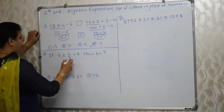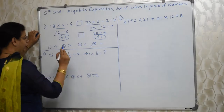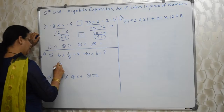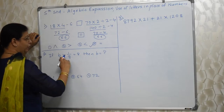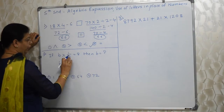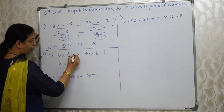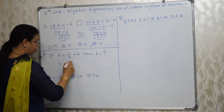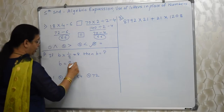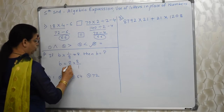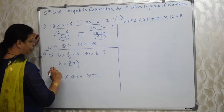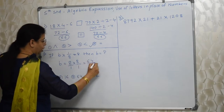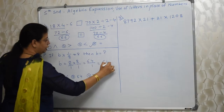Next one: if B into 1 upon 8 is equal to 8, then find B. We need to keep B on one side, and whatever is there with B, we shift it to the other side. This 1 upon 8 — whenever it goes to the other side of the equal to, it becomes its reciprocal. 8 will go on top, 1 will come down. So this 8 is already there, and 1 upon 8 becomes 8 upon 1. So 8 into 8 is 64 upon 1, 1 into 1 is 1. Answer is 64.